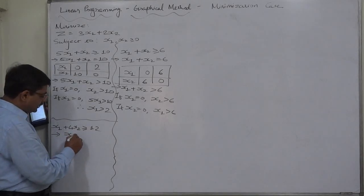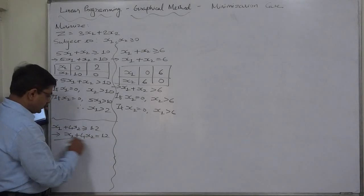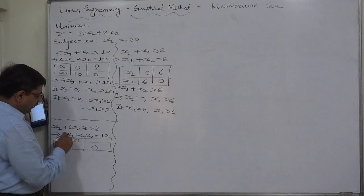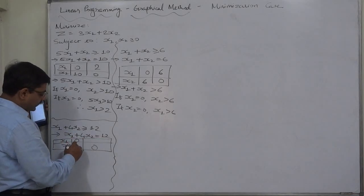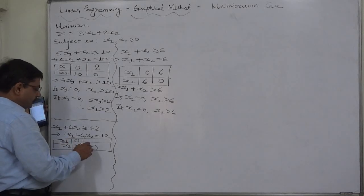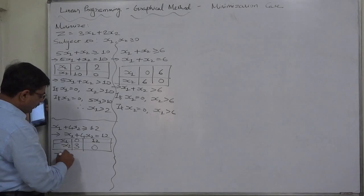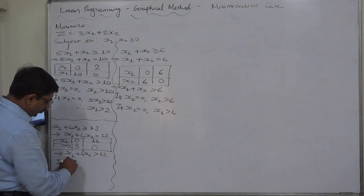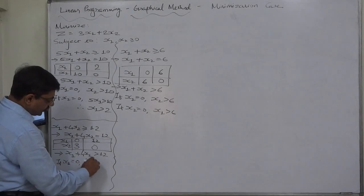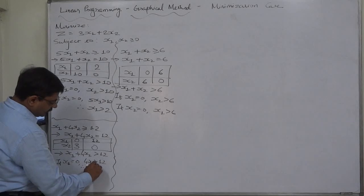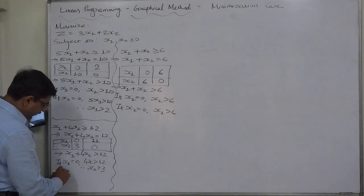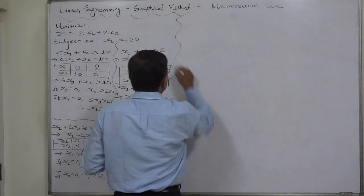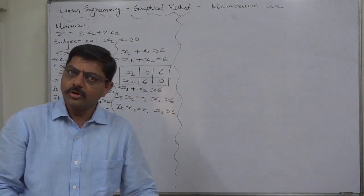Third constraint: x1 plus 4x2 greater than or equal to 12. Equality part — x1 plus 4x2 equals 12: if x1 is 0, then 4x2 equals 12 so x2 equals 3; if x2 is 0, then x1 equals 12. Inequality part — x1 plus 4x2 greater than 12: if x1 is 0, then 4x2 greater than 12 so x2 greater than 3; if x2 is 0, then x1 is greater than 12.